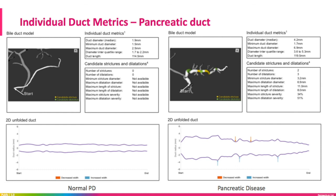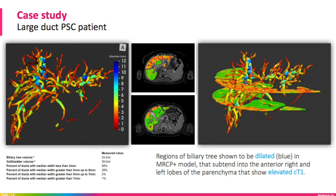These examples show how precise MRCP+ measurements are, even being so small in diameter. As you can see from the comparable color coding of each image, there is a correlation between metrics of Liver Multi-Scan and MRCP+ of the same patient. This case study presents the ability to reinvent the way we assess any biliary disease that affects the liver. With an overlay and dual examination, you can see the dilatations of MRCP+ correlate exactly where you see the fibroinflammatory activity provided by Liver Multi-Scan.